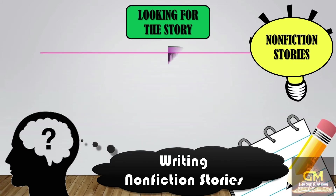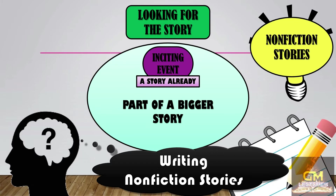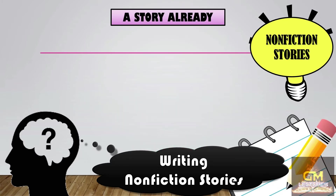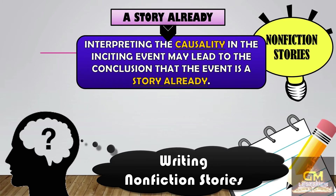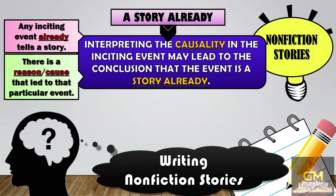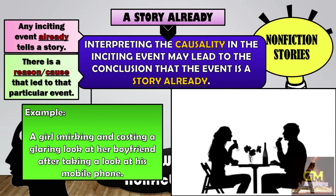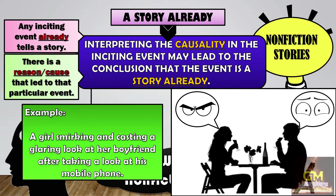This is because when writing non-fiction stories, an inciting event is considered to be an already complete story, which is part of an even bigger story. Interpreting the causality in the inciting event may lead to the conclusion that the event is a story already — there is a reason or a cause that led to that particular event. An example would be a girl smirking and casting a glaring look at her boyfriend after taking a look at his mobile phone. That leads us to speculate what events caused this particular moment and to predict or assume what might happen next.